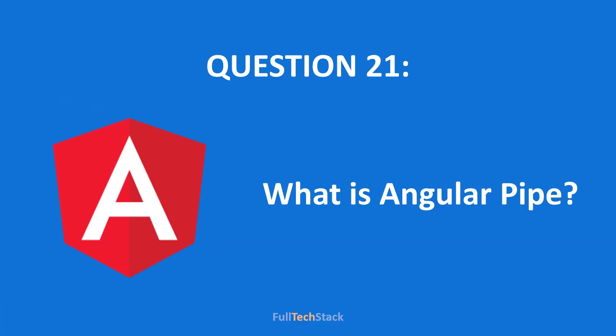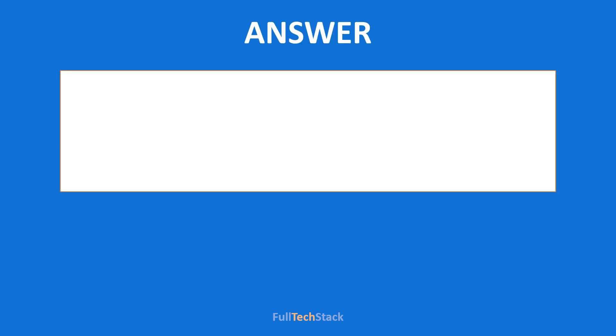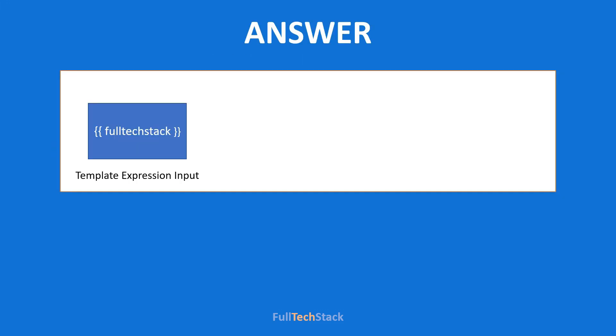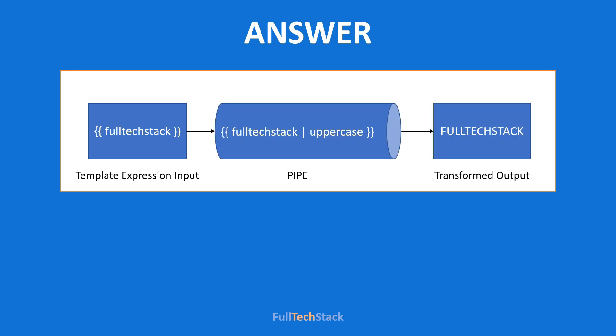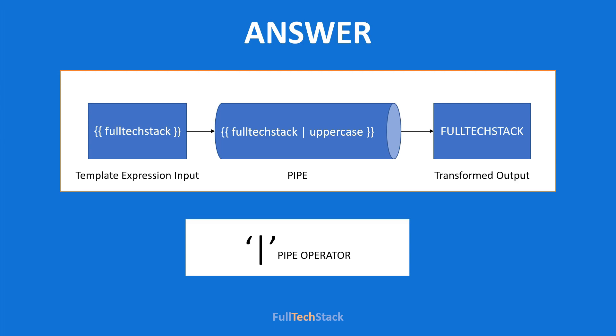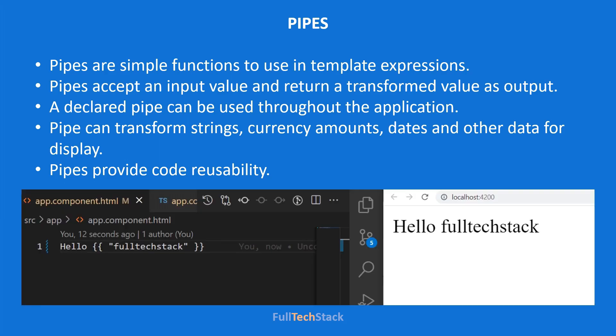What is an Angular pipe? Pipes in Angular are simple functions that take a template expression as input, transform it, and return the transformed output. To apply a pipe we have to use the pipe operator within a template expression. Pipes are very useful because we declare a pipe only once and can use it throughout our Angular application — that is, it helps in code reusability.